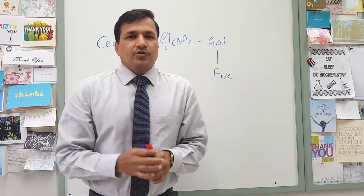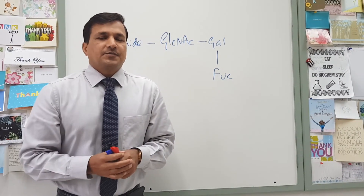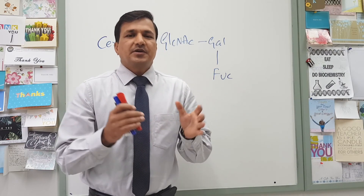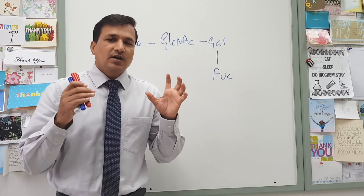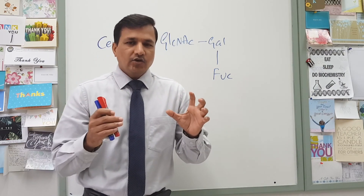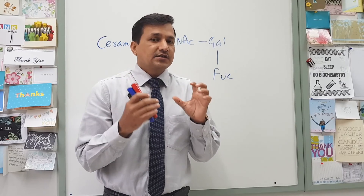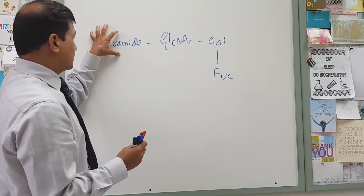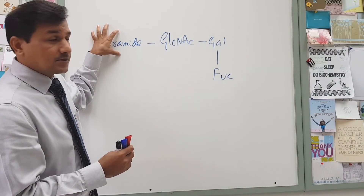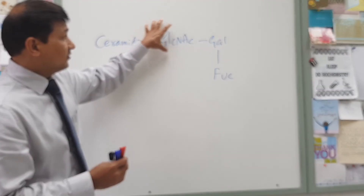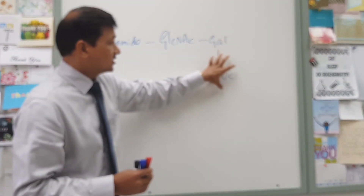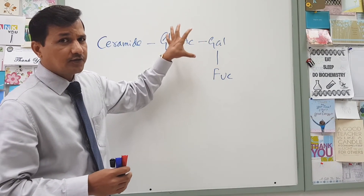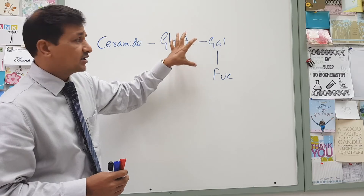Let me explain the blood group substances. The blood group substance is basically a glycolipid which contains a ceramide. Ceramide is the lipid part of the blood group substance, and then we have a carbohydrate attached to it — that is the carbohydrate portion of the blood group substance.